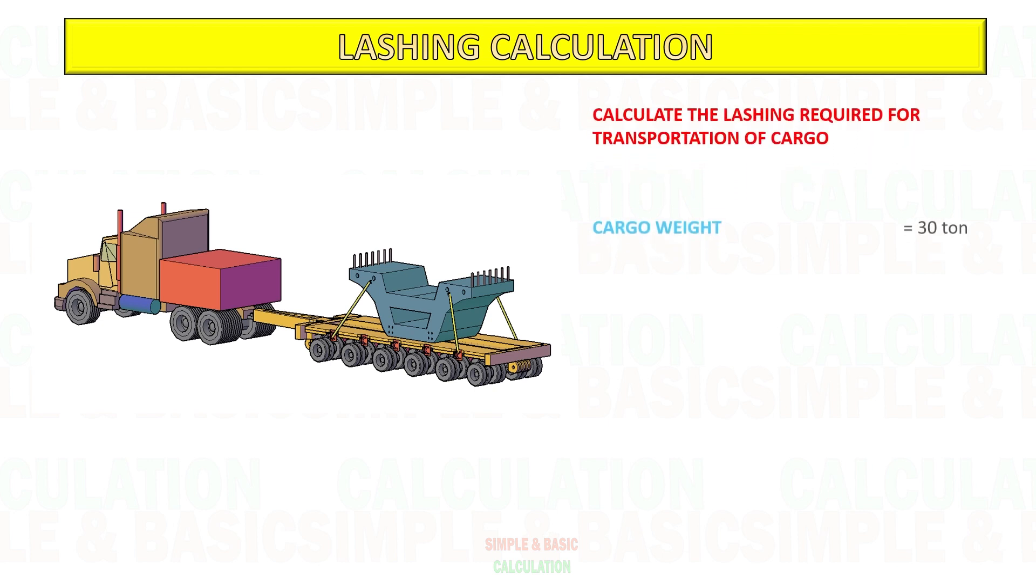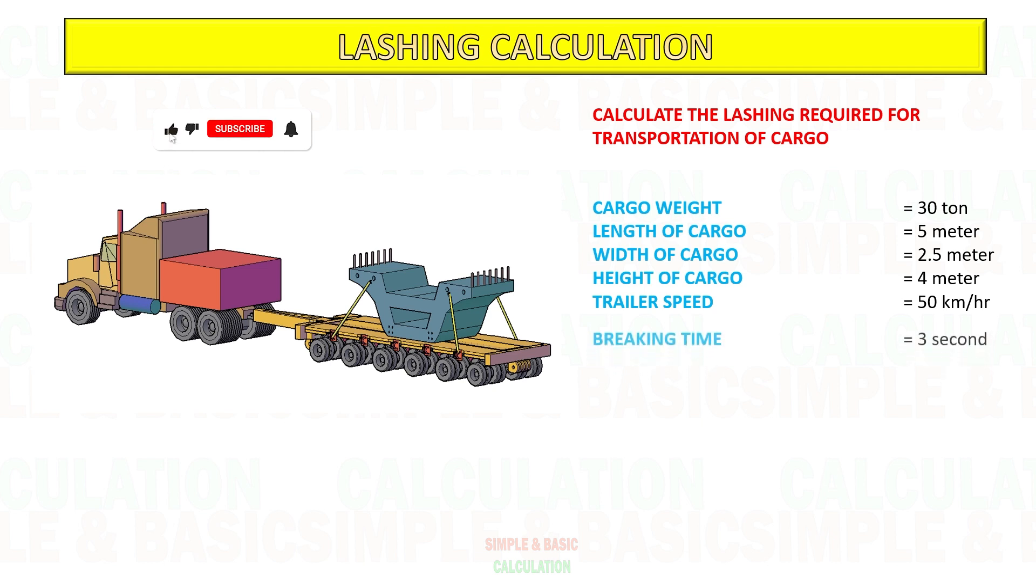Example: Calculate the required lashing for 30-ton concrete cargo with length of 5 meter, width of 2.5 meter and height of 4 meter. We consider the trailer speed is 50 km per hour and braking time is 3 seconds. Using prime mover with ballast counterweight and six-axle line multi-axle trailer to pull the cargo.